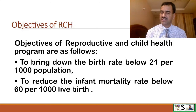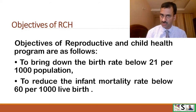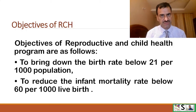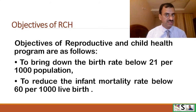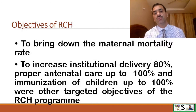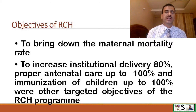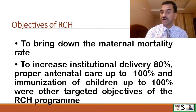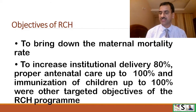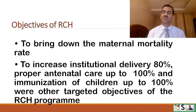The objectives of the Reproductive and Child Health program are as follows: to bring down the birth rate below 21 per 1000 population; to reduce the infant mortality rate below 60 per 1000 live births; to bring down maternal mortality rates; to increase institutional delivery to 80 percent; proper antenatal care up to 100 percent; and immunization of children up to 100 percent.